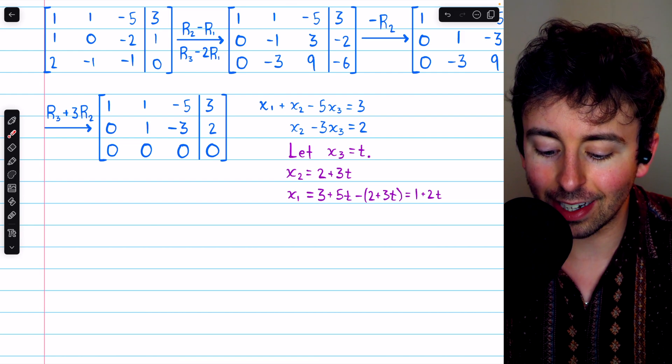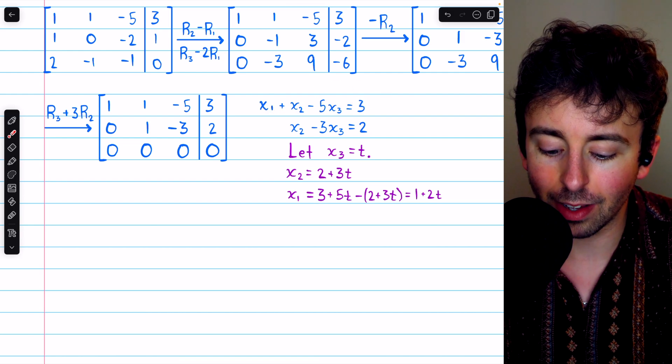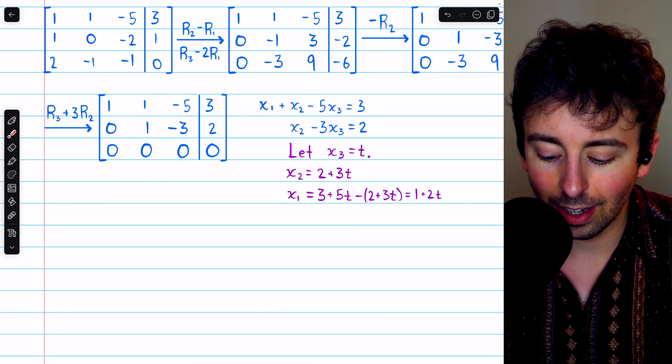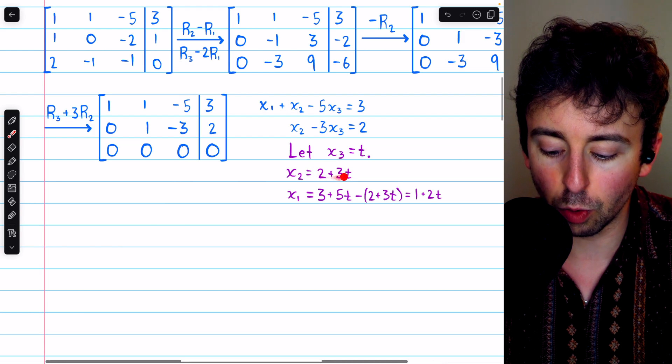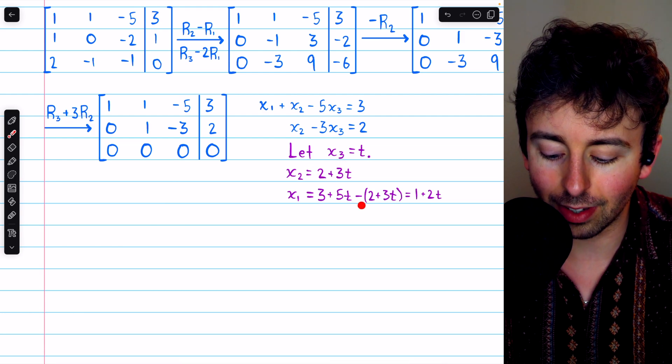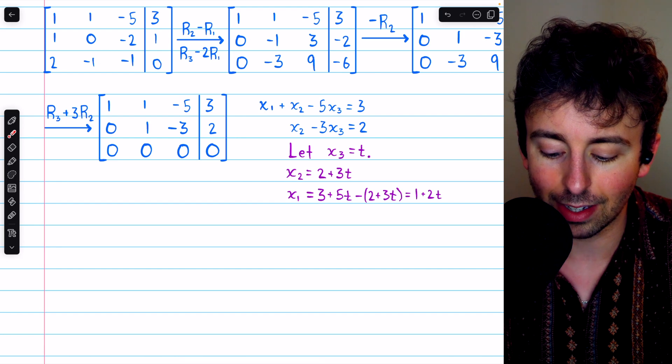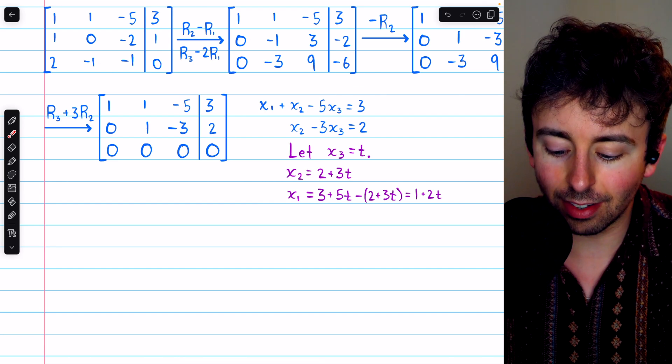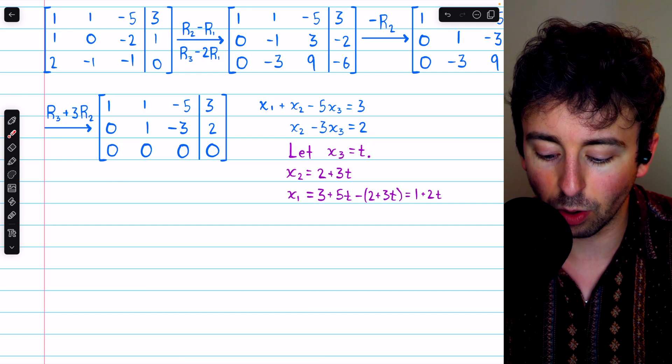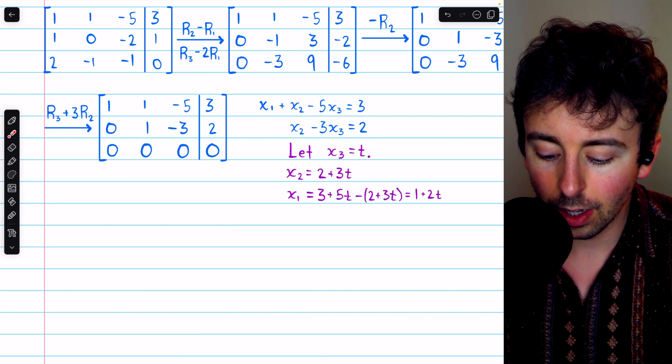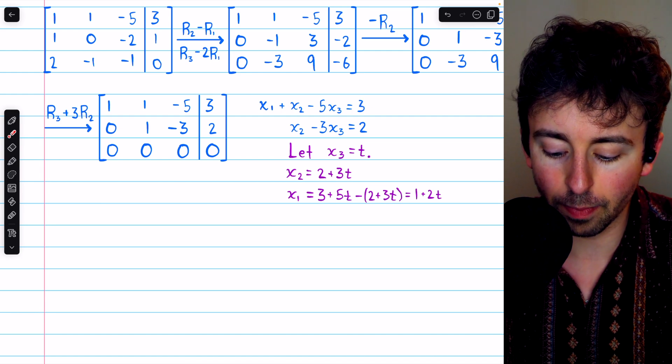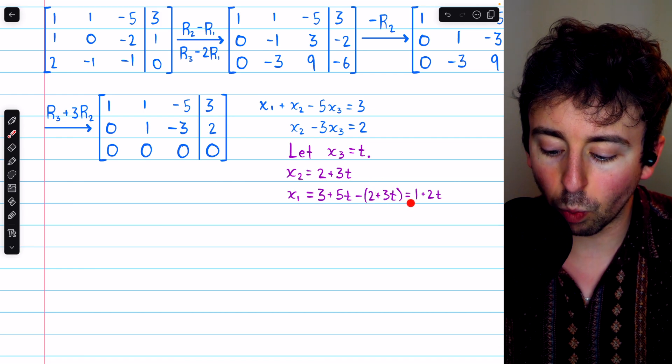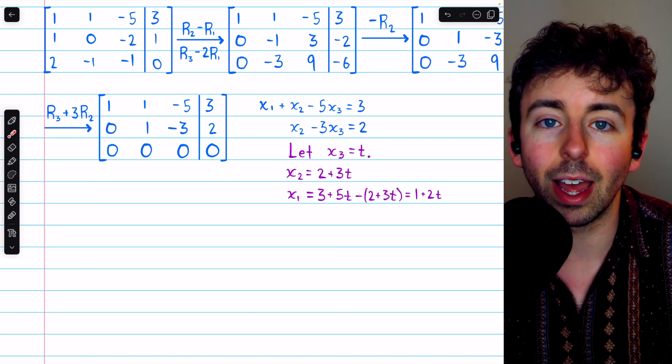Then we can plug that into this first equation and move everything to the right side to get x1 by itself. Subtracting x2 from both sides is the same as subtracting 2 plus 3t from both sides, which is why we see minus 2 plus 3t. And then adding 5x3 to both sides is the same as adding 5t to both sides, so we see plus 5t. Now this is 3 because there was a 3 over there: 3 plus 5t minus 2 plus 3t. Just simplifying this, we end up with 1 plus 2t, and that's what x1 equals.